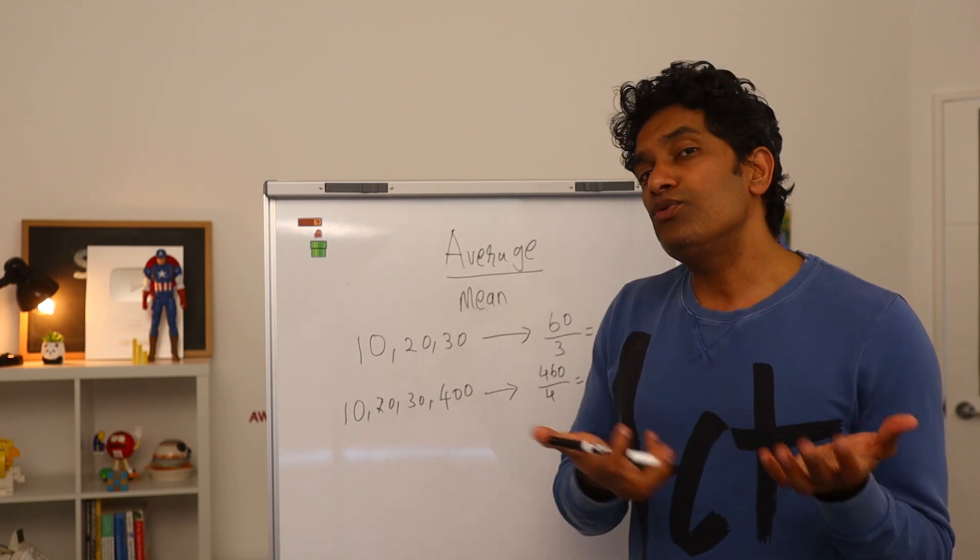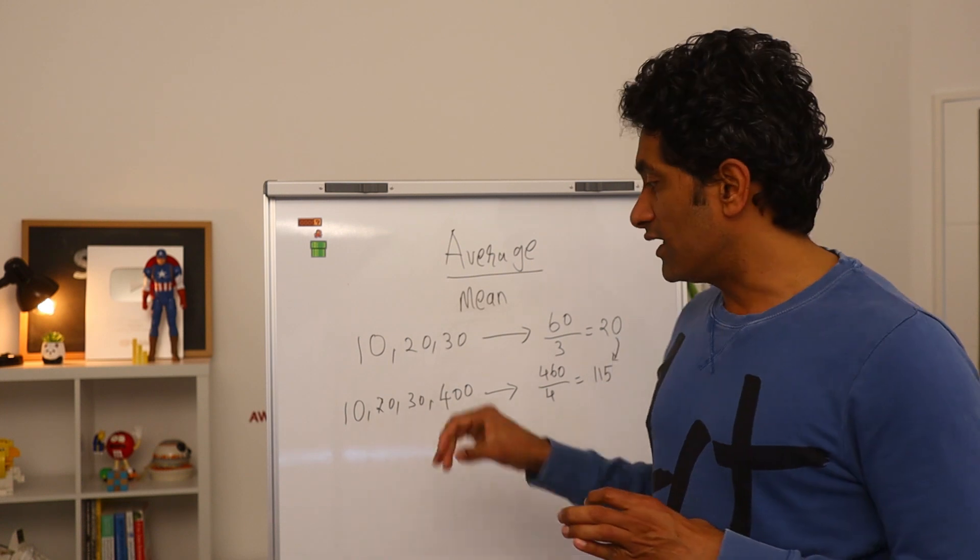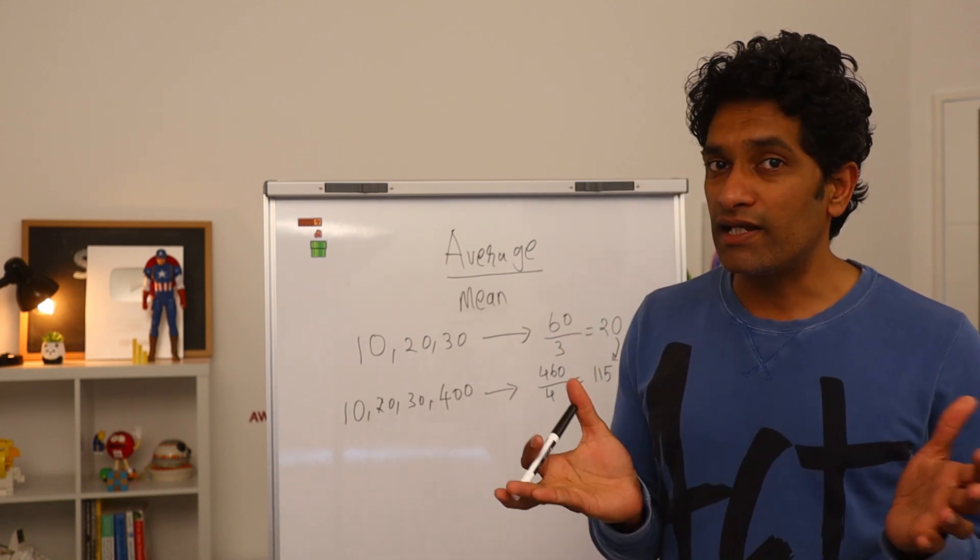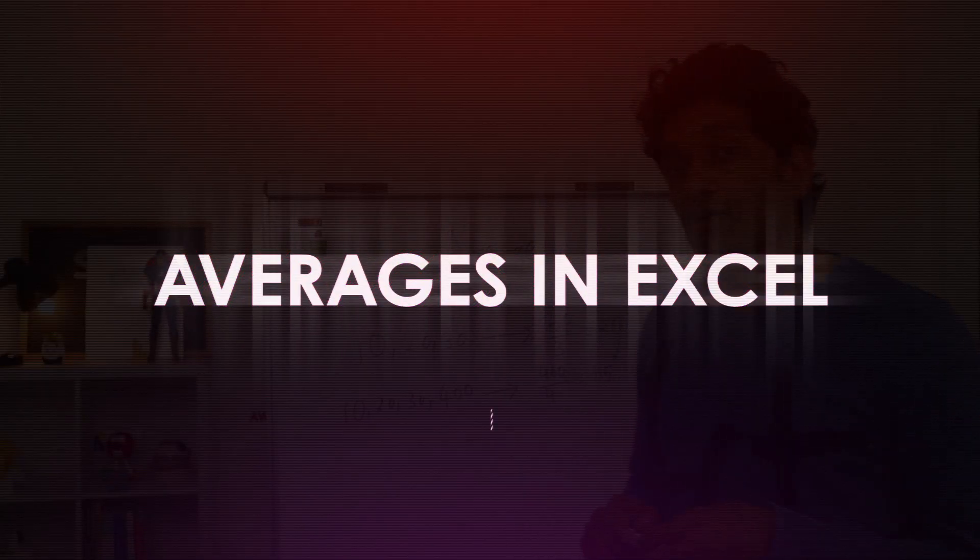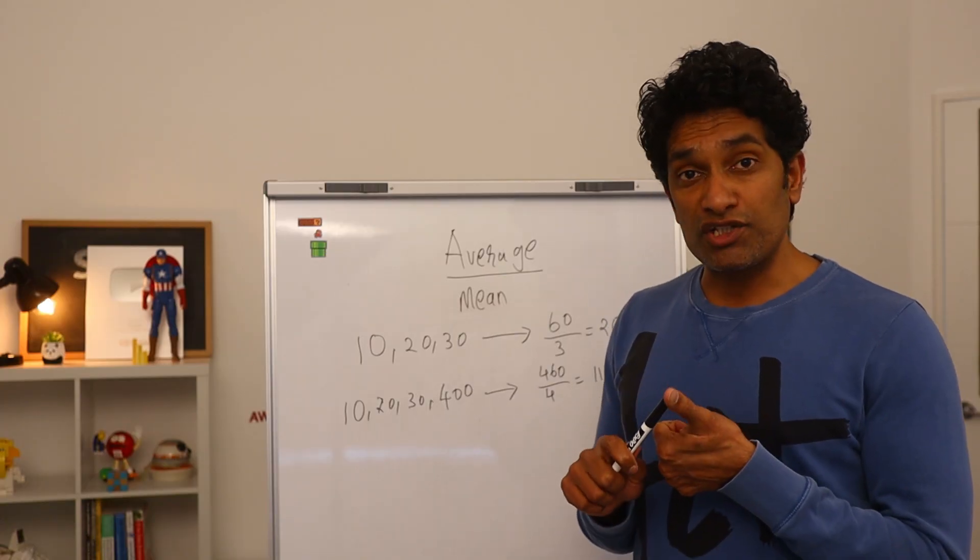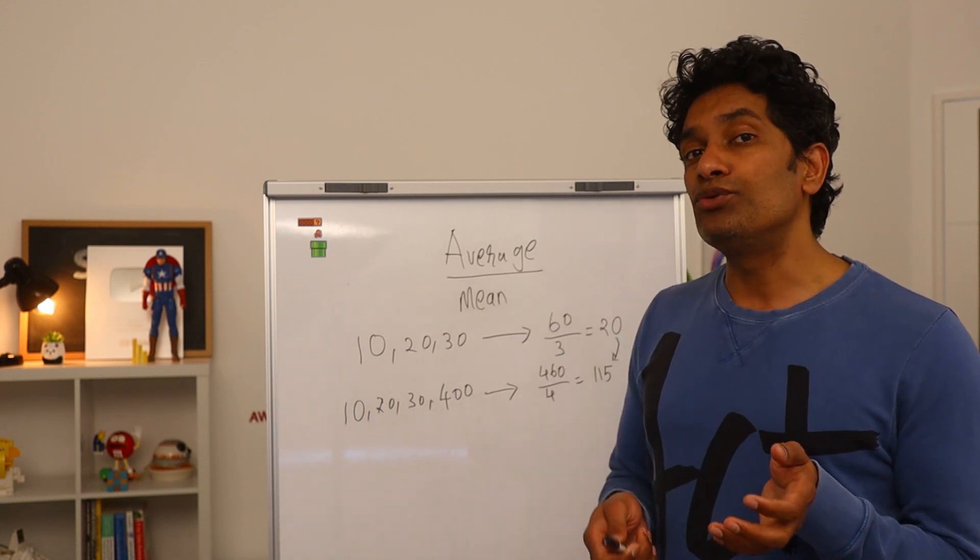So anytime you're using averages as a proxy for explaining what's happening in the data, keep this in mind. If your data has some Bill Gates, then you want to be really careful. How do we calculate these averages in Excel? We can use the average function in Excel, but Excel also has many other functions that can do the average.